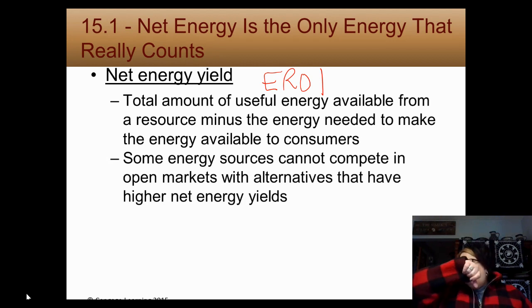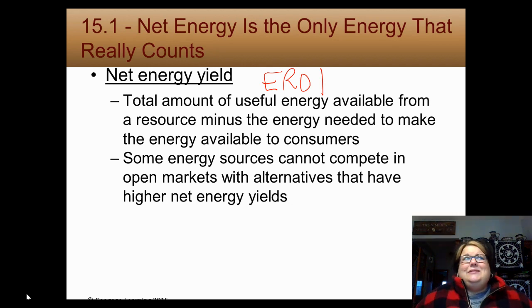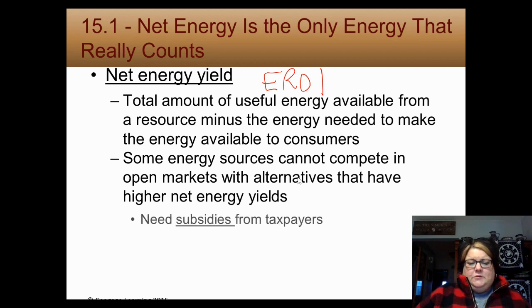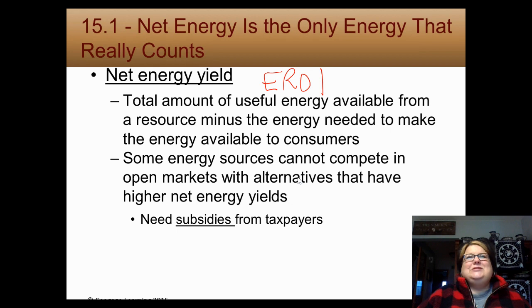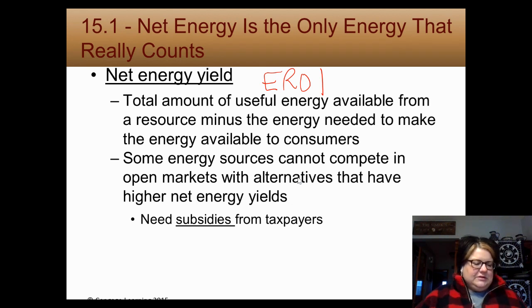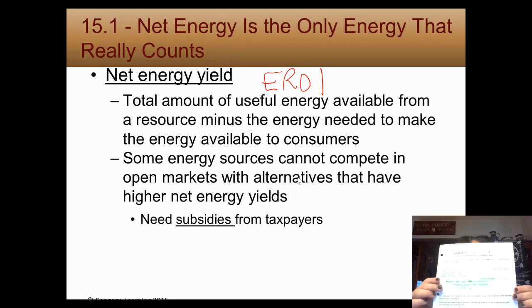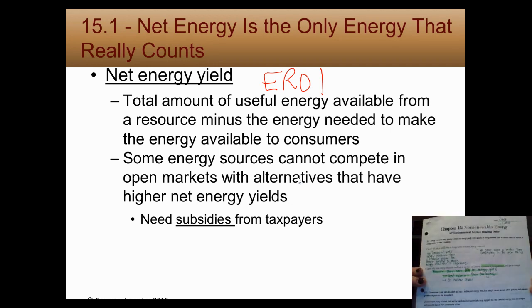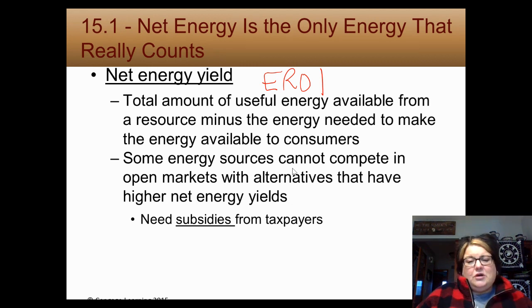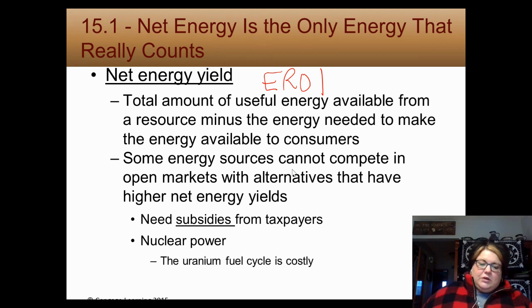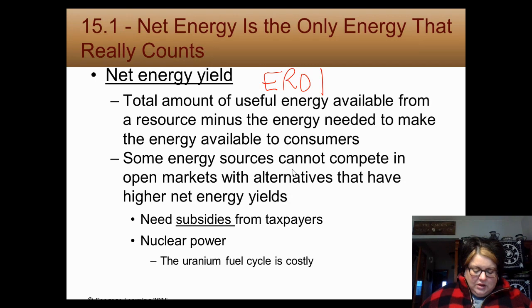Some energy sources have really high net energy yield — hydroelectric, wind, coal. Some are low, like biomass burning. Some are negative, like nuclear. Sources with low net energy yield can't compete and need subsidies, which we talked about last lecture. Number two asks why some energy resources need subsidies — the answer is low net energy yield; nuclear is your example. Medium sources include petroleum, light oil, natural gas, geothermal, and solar. Low ones include ethanol from corn, biodiesel, heavy oil from shale or tar sands.